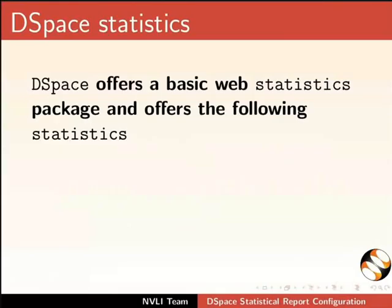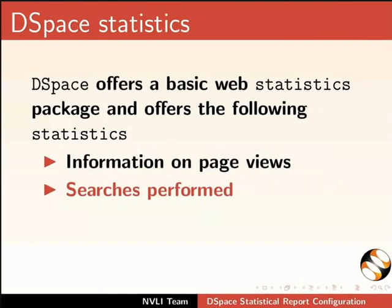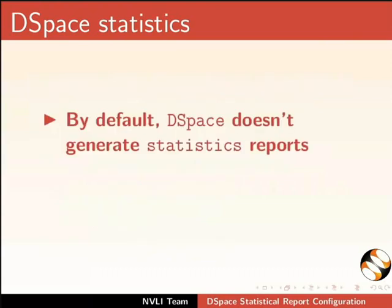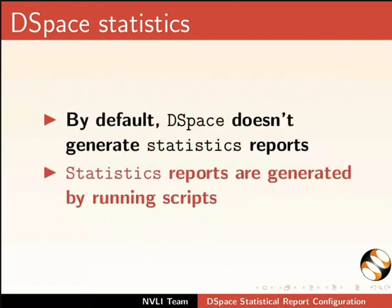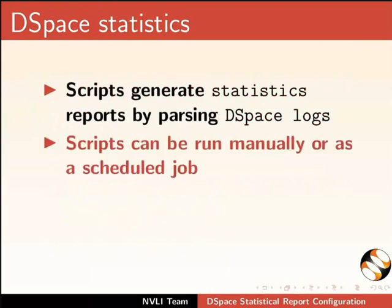DSpace offers a basic web statistics package with the following statistics: information on page views, searches performed, user logins, and errors and warnings. By default, DSpace doesn't generate statistics reports. Statistics reports are generated by running scripts, which generate statistics reports by parsing DSpace logs. Scripts can be run manually or as a scheduled job.